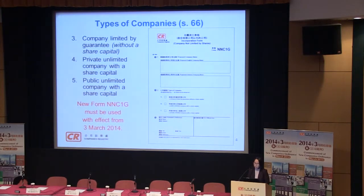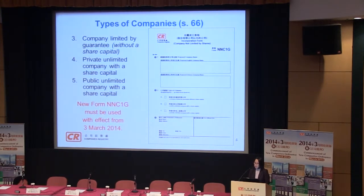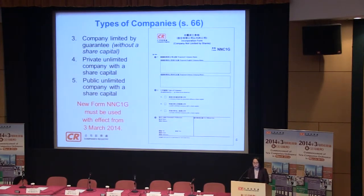The other three types are: Company Limited by Guarantee without a share capital, Profit Unlimited Company with a share capital, and Public Unlimited Company with a share capital. There aren't too many of types 4 and 5. You use NC1G. The new form NC1G must be used with effect from the 3rd of March this year.